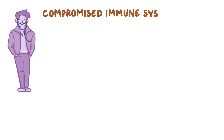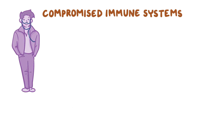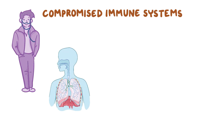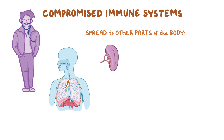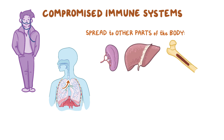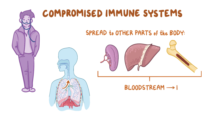In rare cases, and almost universally in individuals with compromised immune systems, the infected macrophages can move into the lymphatics and spread the bacteria to other parts of the body, especially to the spleen, liver, and bone marrow. And from these organs, they can spread to the bloodstream, causing disseminated disease.